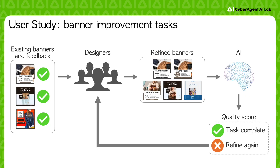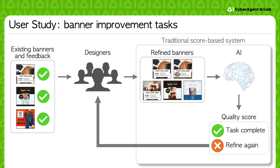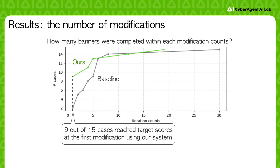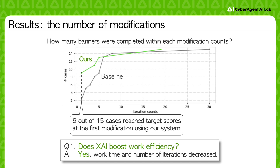In the user study, we invited professional banner designers to participate. They were tasked with enhancing the quality score of banners using either the traditional score-based system or our XAI system in a real-world setting. The results showed that designers equipped with our XAI system achieved their target scores more swiftly and with fewer iterations, highlighting the system's effectiveness.